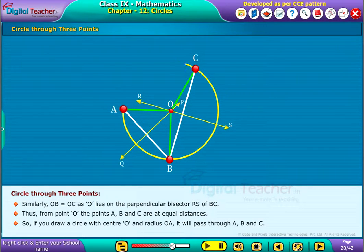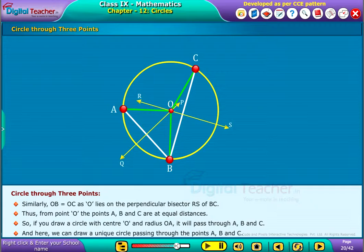If you draw a circle with center O and radius OA, it will pass through A, B and C. And here, we can draw a unique circle passing through the points A, B and C.